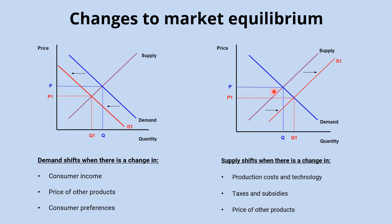Moving on to factors that affect supply: an improvement in technology will increase supply, because suppliers are incentivized to produce more at any given price. This shifts the supply curve to the right, moving to a new market equilibrium at price P1 and quantity Q1.